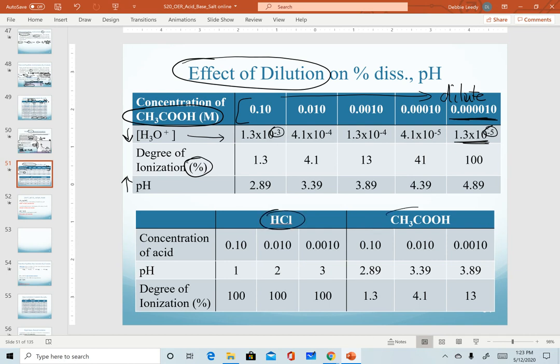The second table is showing the same thing, but now we're comparing HCl to acetic acid. So notice we're diluting each one as we move to the right, indicating how the pH changes. And in the bottom row, the change in degree of ionization.